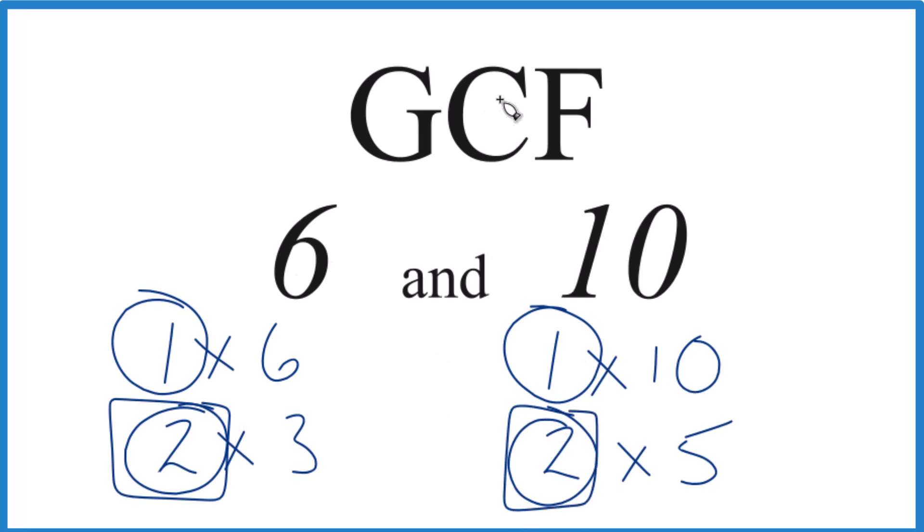That makes the GCF for 6 and 10, 2. You could also do this with prime factorization, but these numbers are pretty small, so this is probably quicker and easier.